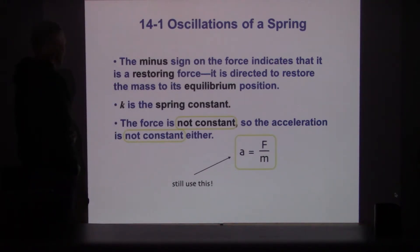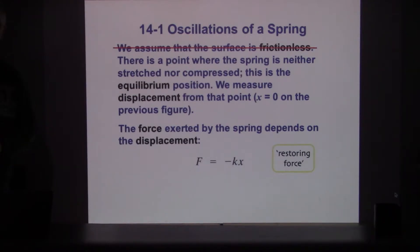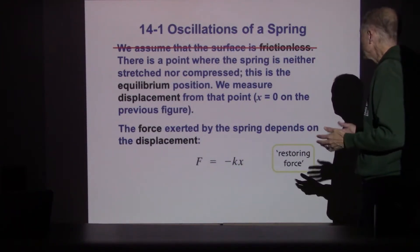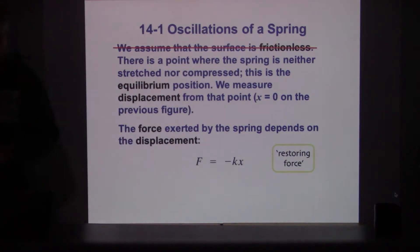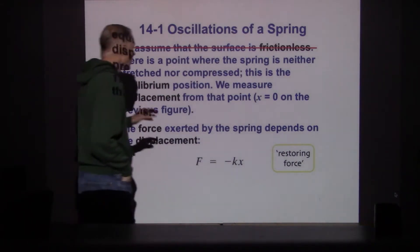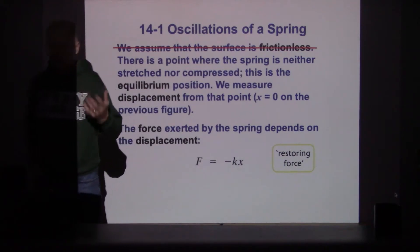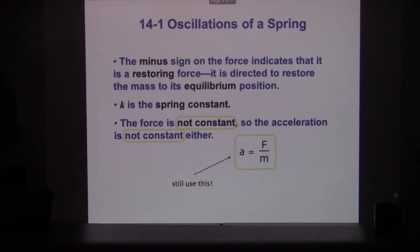k is the spring constant - we've seen this when doing work, energy, and potential energy calculations. There's a certain amount of energy stored in a compressed or stretched spring. You might ask: are there other systems besides springs? We'll find that there are other types of oscillatory systems that don't involve springs, but all oscillatory systems involve a restoring force. We can set up a formula like this for all oscillating systems, making k more generally a force constant.